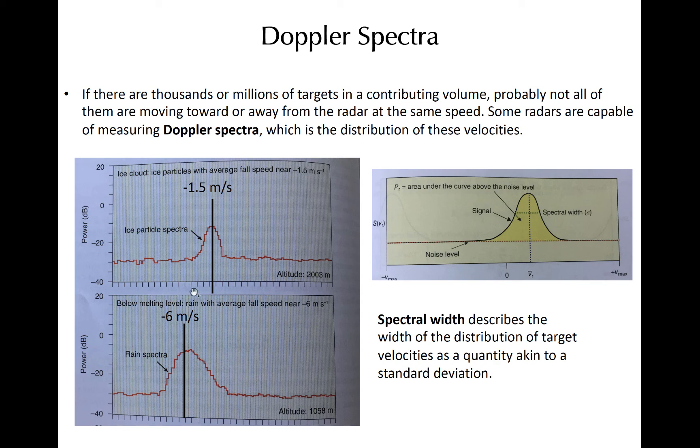A couple of examples from real data are shown at left. The top example shows the distribution of radial velocities for a volume of ice crystals that were moving toward the radar and an average of 1.5 meters per second. However, ice crystals with velocities of 0 and up to over 3 meters per second toward the radar were observed. Each tick mark right here is about 1 meter per second. And you can sort of figure out where they are based on this line here, which is 1.5 meters per second.